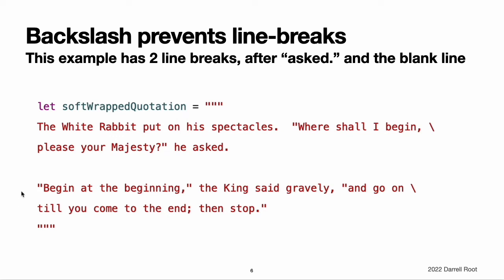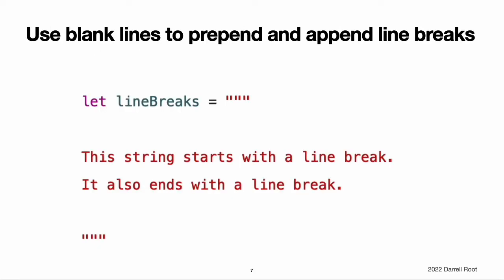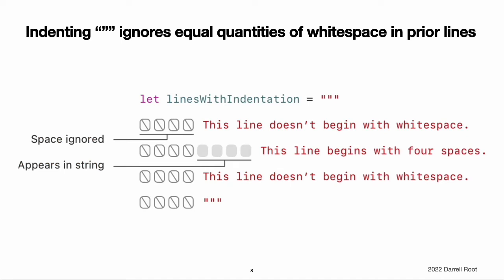If you want to use line breaks to make your source code easier to read, but you don't want the line breaks to be part of the string's value, write a backslash at the end of those lines. To make a multi-line string literal that begins or ends with a line feed, write a blank line as the first or the last line. A multi-line string can be indented to match the surrounding code. The white space before the closing quotation marks tells Swift what white space to ignore in all of the other lines. However, if you write white space at the beginning of a line in addition to what's before the closing quotation marks, that white space is included.